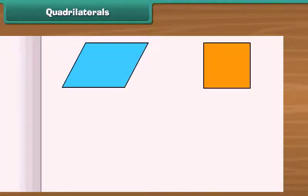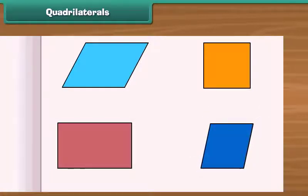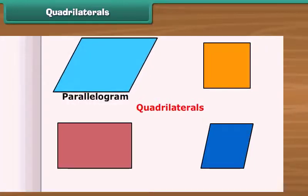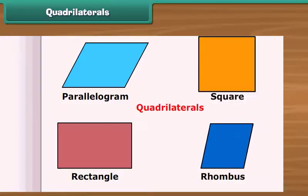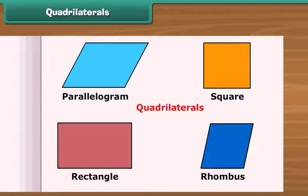What will you call those polygons which are formed by four line segments? Such polygons are called quadrilaterals. There are several types of quadrilaterals. These are parallelogram, rectangle, rhombus and square. Let us discuss each type in detail.